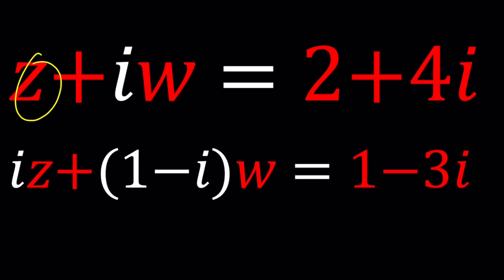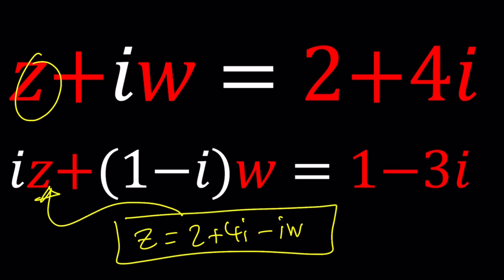That's fairly easy because we don't have to divide by anything. Z can be written as 2 plus 4I minus IW. And then that can be substituted here. We're going to get an equation in W only because everything else is constants. And then we can just isolate W from there. Of course, there's going to be some factoring, some work to do. But it's doable, I hope.